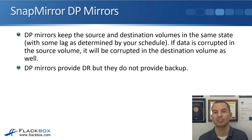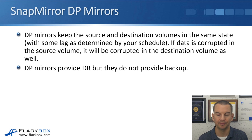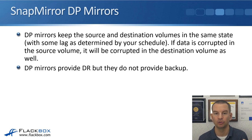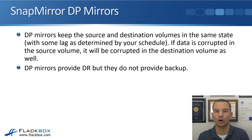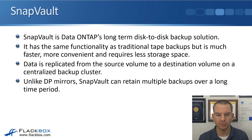DP mirrors keep the source and destination volumes in the same state — the same data on both sides with some lag as determined by your schedule. If data is corrupted in the source volume, that corruption is going to be replicated over to the destination volume as well. So DP mirrors provide disaster recovery functionality, but they do not provide backup. If you have a problem in the source volume, it will be replicated to the destination volume and you cannot roll back to an earlier version.